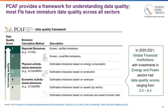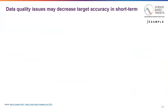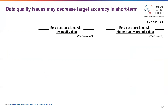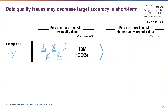Another common concern that financial institutions have around data quality relates to the errors that may be at risk. Let's examine two different portfolio companies and what happens as they grow their data maturity. Our first example is a power generation company that estimated their emissions to be about 10 million tons of carbon dioxide equivalent, using revenue-based data at PCAF data quality four or five. Over time, they tracked down their actual emissions and achieved a data quality score of two. They discovered that their plants were much more efficient than industry standards and estimates — in fact, their emissions were only 10% of the original estimates.